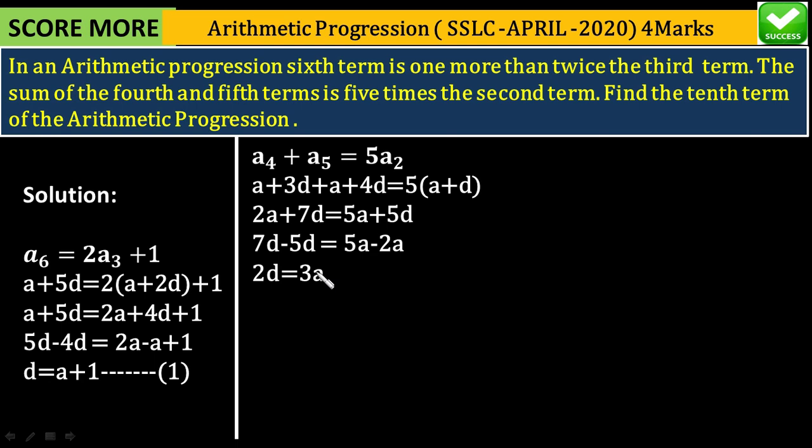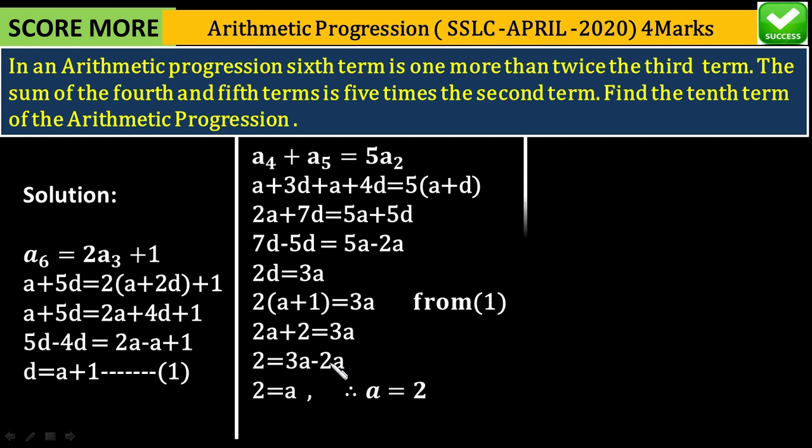Now simplify: 2a plus 2 equals 3a. Shift 2a to the right side, we get 2 equals 3a minus 2a. The value of a equals 2.